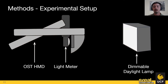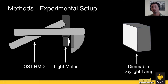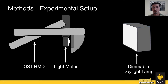To look at these questions we created a simple experiment where we had an optical see-through HMD positioned directly in front of a dimmable daylight lamp. These lamps are capable of reaching very high levels of illuminance. We positioned the two such that we could put a light meter into the headset at the user's left eye position and make luminance measures from that position, getting an idea of how the light appears from the user's perspective.